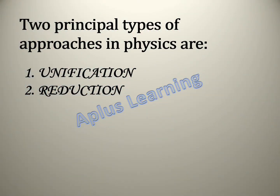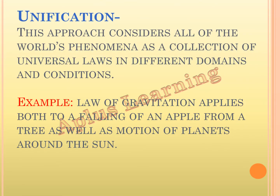There are two principal types of approaches in physics: unification and reduction. Unification considers all of the world's phenomena as a collection of universal laws in different domains and conditions. The best example is the law of gravitation, which applies both to the falling of an apple from a tree as well as to the motions of planets around the sun. Another example is the laws of electromagnetism, which govern all electric and magnetic phenomena.